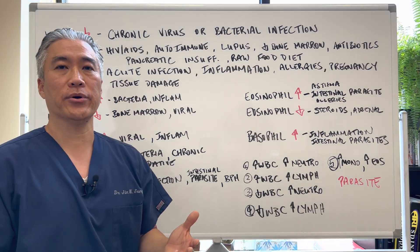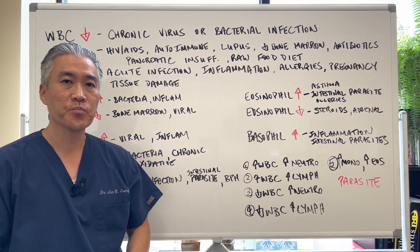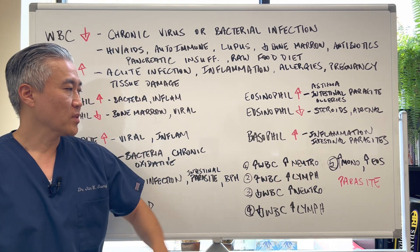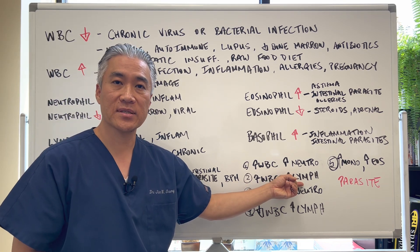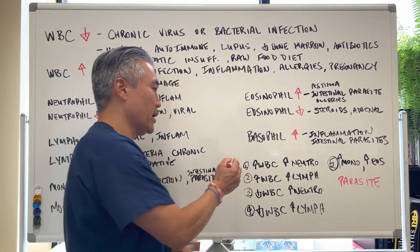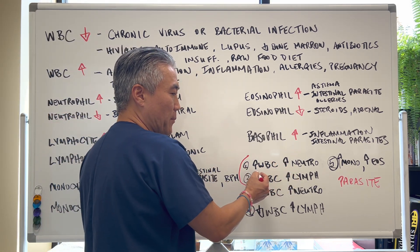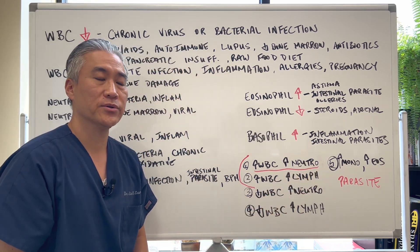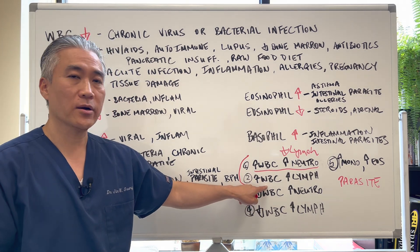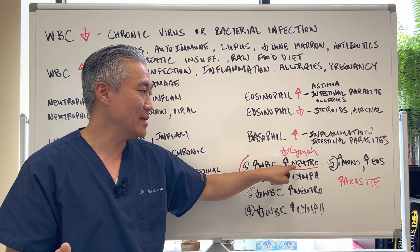Here are the clinical pearls. If white blood cell count is elevated with an elevation of neutrophils, that is an acute bacterial infection. When you see elevated white blood cell count with an increase in lymphocytes, that's an acute viral infection. With acute bacterial infection you'll have an increase in neutrophils and initially a decrease in lymphocytes. With acute viral infection you'll have an increase in lymphocytes and often a decrease in neutrophils.